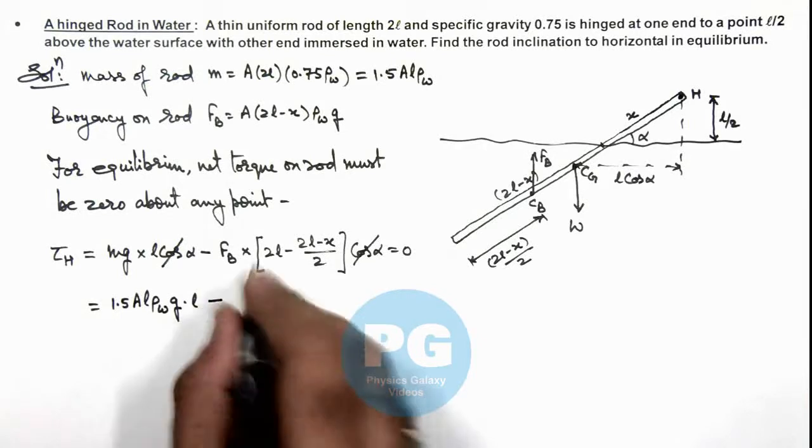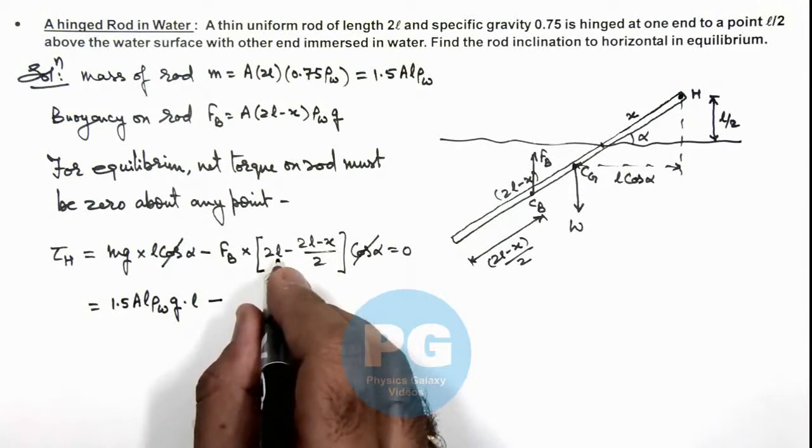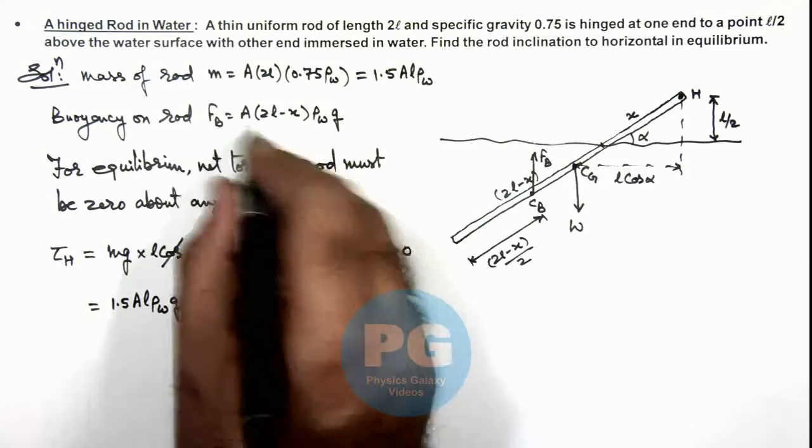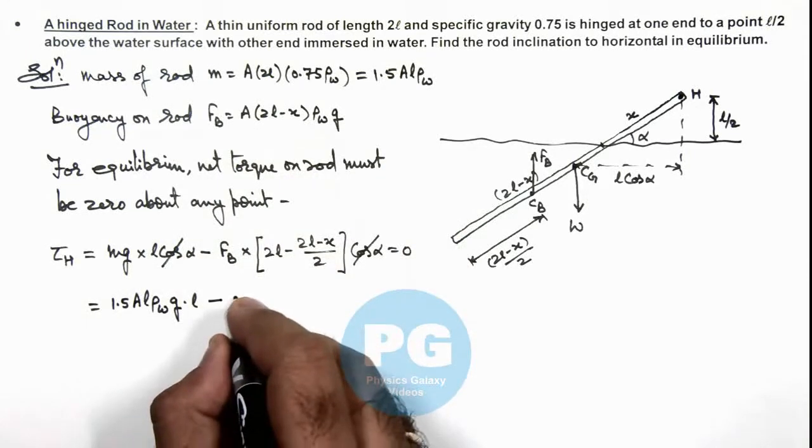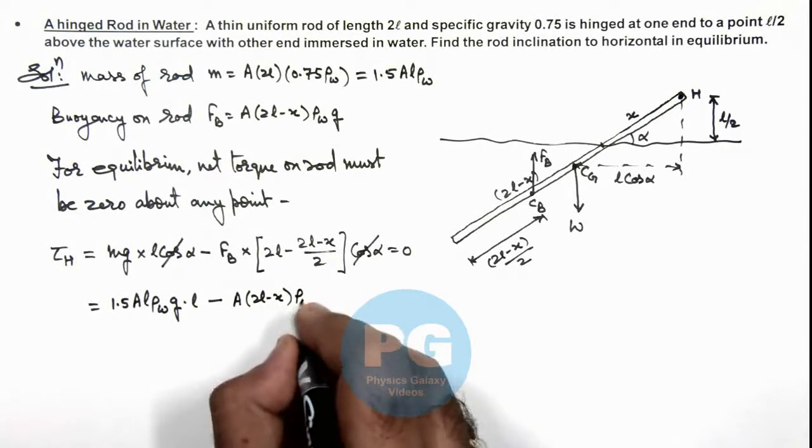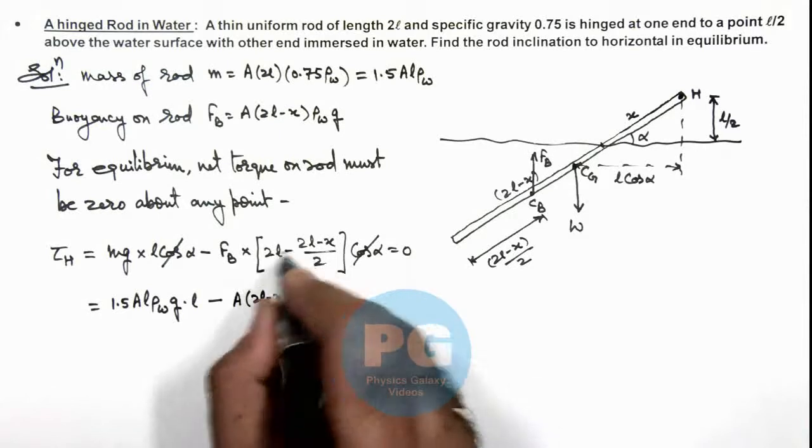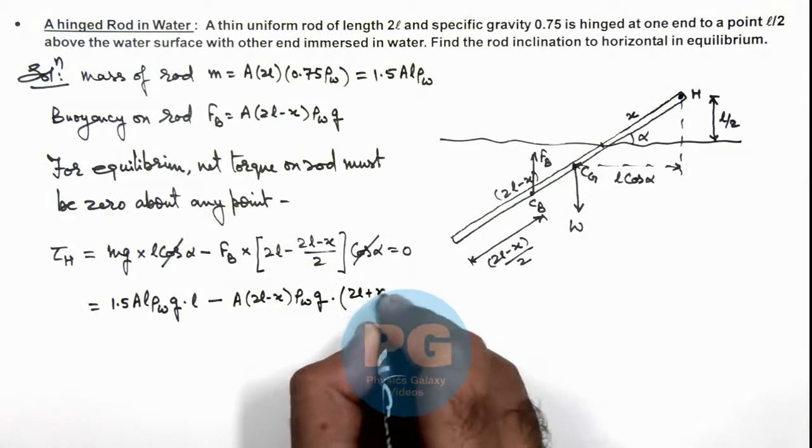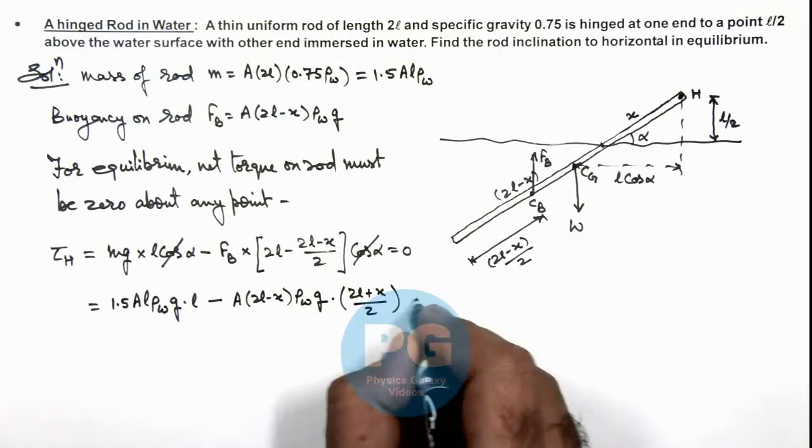And this should be equal to 0. And if we simplify these terms here, A ρ_w g gets cancelled out again.